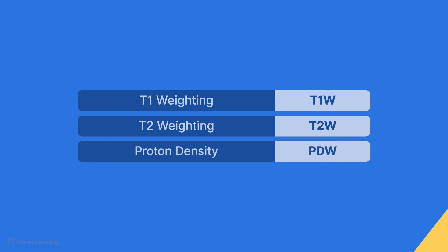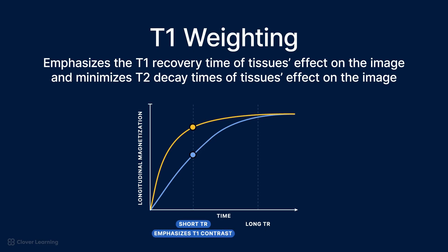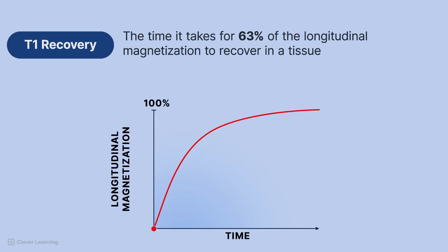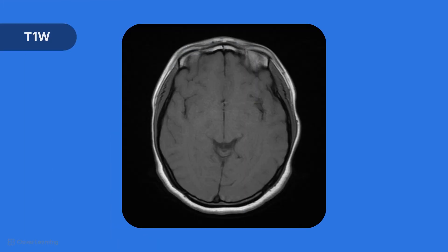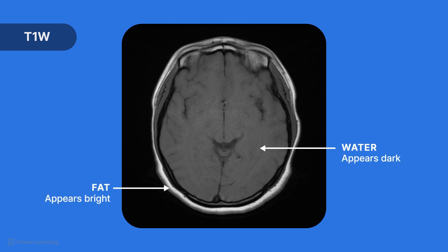Let's start with T1 weighting. T1 weighting maximizes T1 contrast, which emphasizes the T1 recovery time of tissue's effect on the image and minimizes T2 decay times of tissue's effect on the image. T1 recovery time is the time it takes for 63% of longitudinal magnetization to recover in a tissue. In other words, T1 recovery is an intrinsic parameter that measures the time it takes for protons in tissue to realign with the magnetic field after being excited by a radiofrequency, RF, excitation pulse.